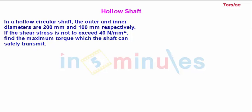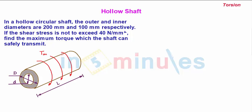So we first draw a simple representation of a hollow shaft. We have this hollow shaft shown in brown color whose outer and inner diameter is capital D and small d respectively, and length of shaft is L.